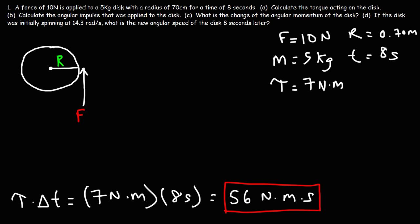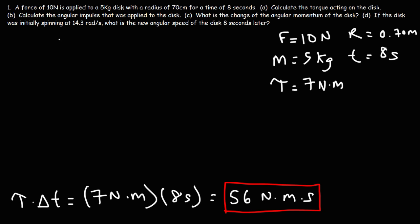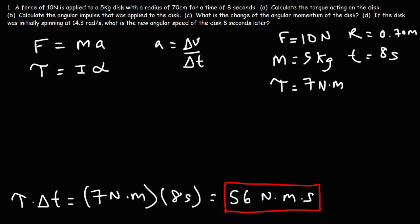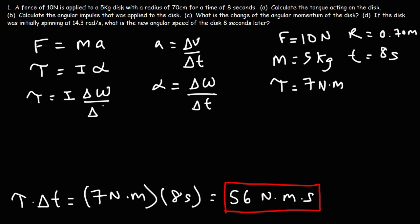Part C: what is the change in angular momentum of the disc? Newton's second law states that the net force on an object equals mass times acceleration. Similarly, the net torque acting on an object equals inertia times alpha, where inertia is the rotational equivalent of mass and alpha is the angular acceleration. Acceleration is the change in velocity divided by time; angular acceleration is the change in angular velocity divided by time.